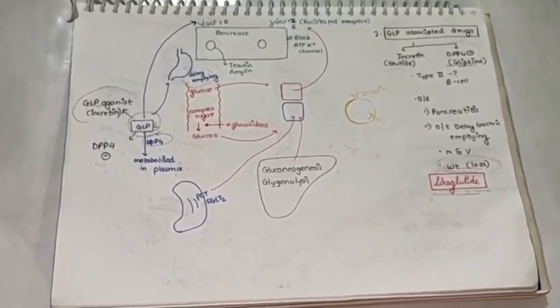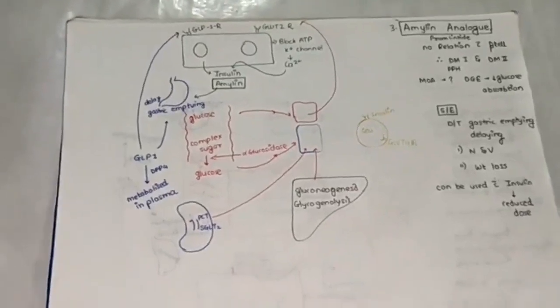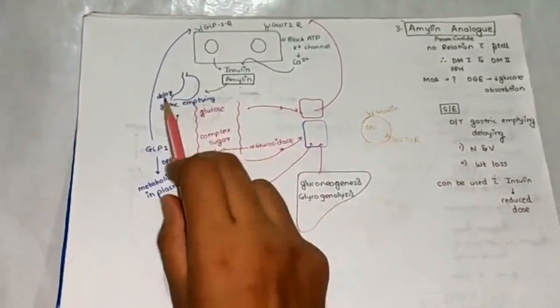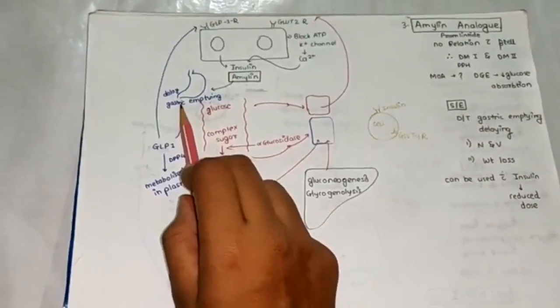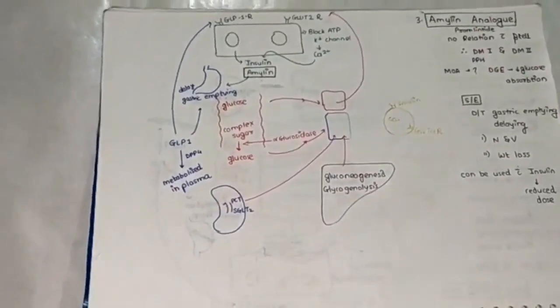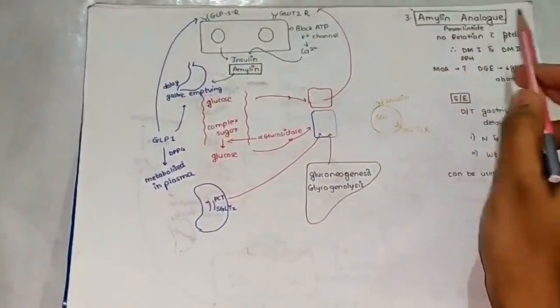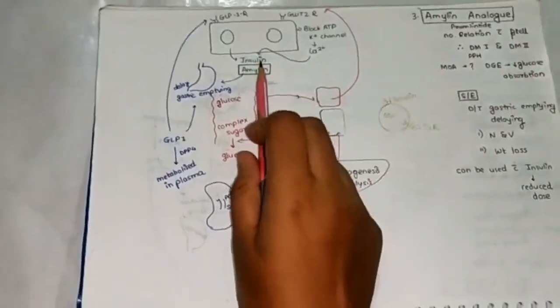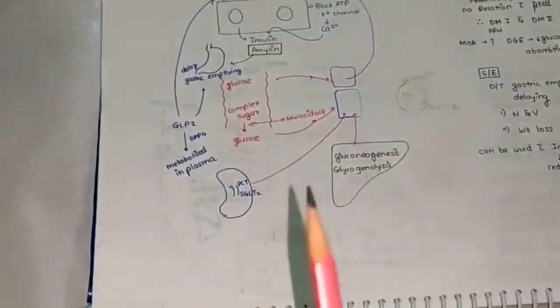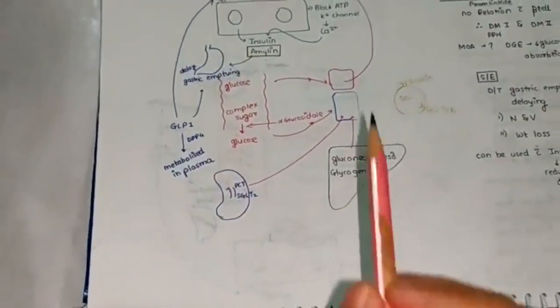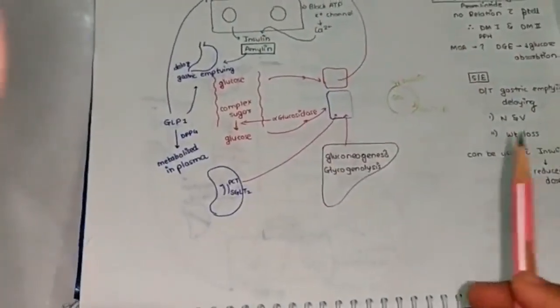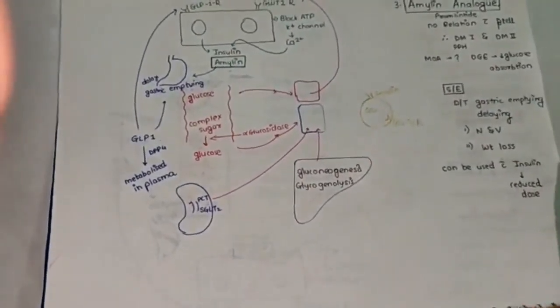Now let's see class 3. Class 3 drug which we can use is amylin analogs. What does this amylin do? This again delays the gastric emptying and will result in reduced absorption of glucose from the small intestine. The drug which we use is pramlintide. There is no relation with beta cell. This GLP-1 agonist is acting on beta cell, therefore it is only useful for type 2 diabetes mellitus. But in case of amylin, there is no relation with beta cell. Therefore, it can be used in both type 1 as well as type 2 diabetes mellitus.